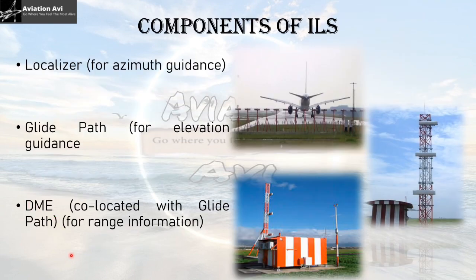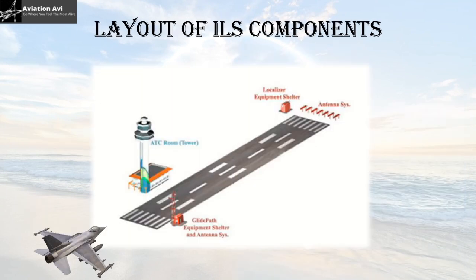The components of an ILS are mainly three. First is the localizer — in this image you can see an array of localizer antennas positioned very close to the runway. Second is the glide path antenna, also located very close to the runway. Third is the DME, or Distance Measuring Equipment, co-located with the glide path.